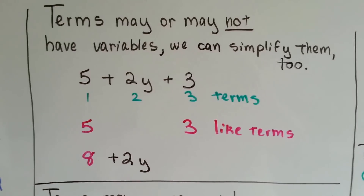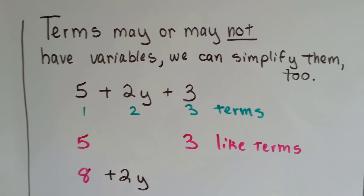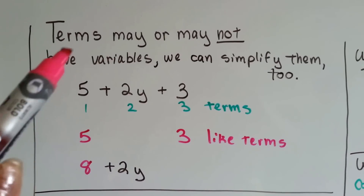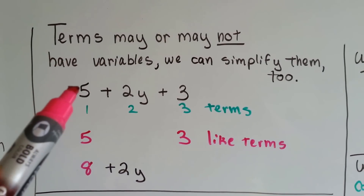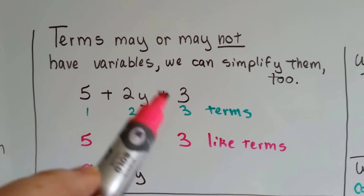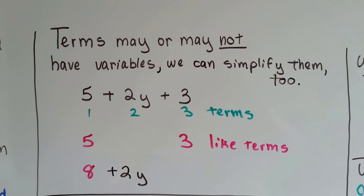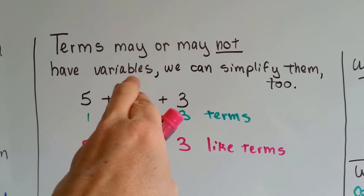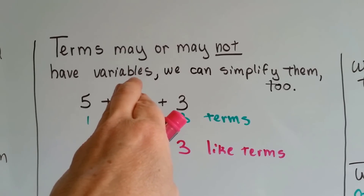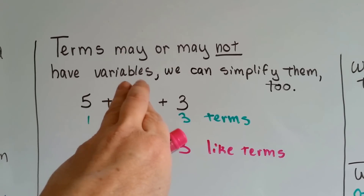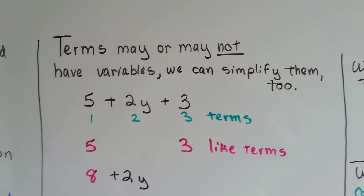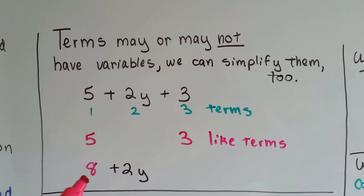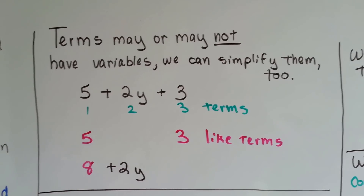Terms may or may not have variables — the letters. We can simplify them too, the terms that don't have any variables. If we have 5 plus 2y plus 3, we've got 1, 2, 3 terms. The 2y is not a like term, but the 5 and 3 are. They're just separate numbers by themselves, so they're considered like terms. We could put them together and have 5 and 3 as 8. So we have 8 plus 2y — we simplified it.